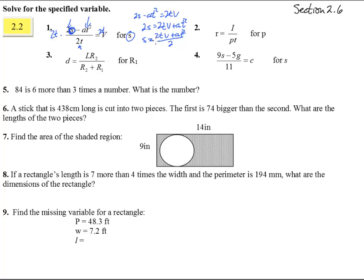So number 2, r equals i over pt. Now if we're trying to get this p by itself, we first got to get it off up here over on the other side. So times both sides by pt, and we get ptr equals i. Now if we're trying to get p by itself, just divide off that tr. So divide both sides by tr, and we get i over tr.